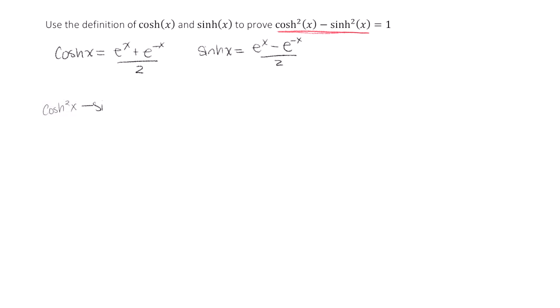So cosh squared x minus sinh squared x equals, and then let's replace cosh and sinh with their definitions.